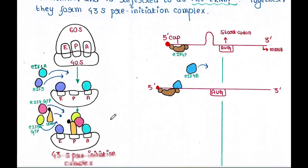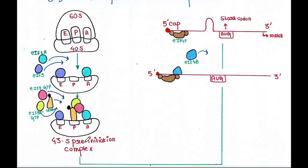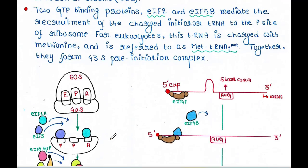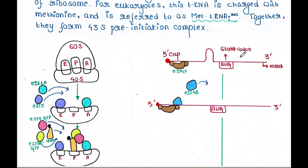And together they form the 43S pre-initiation complex. So here, eIF1A is present, eIF3 is present, eIF2 is present, eIF5B is present, and the tRNA along with methionine is present. This is the 43S pre-initiation complex. Now we will see what happens in the mRNA.